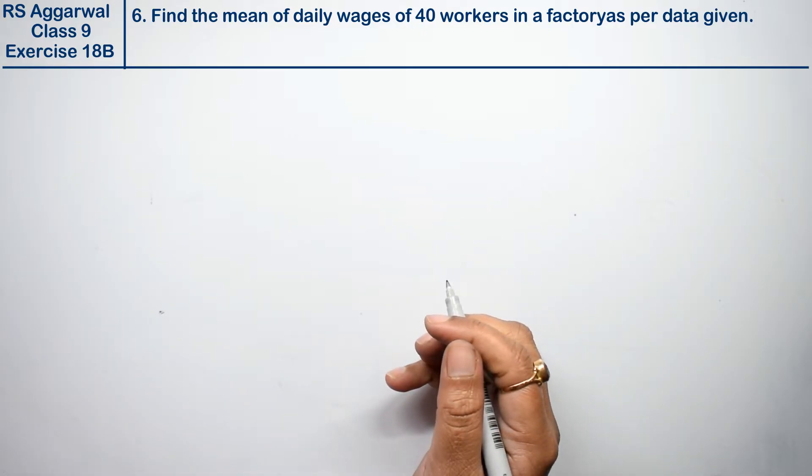Let's do question number 6 of exercise 18B, that is mean, median and mode of ungrouped data. Question number 6 is find the mean of daily wages of 40 workers in a factory as per the data given below.